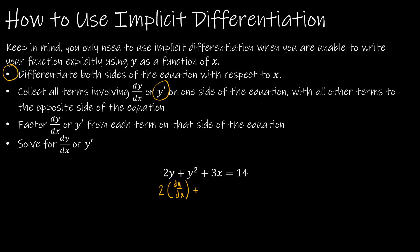Now look at y squared. If this was x squared, the derivative would be 2x — so it's 2y. But then because it's a y, chain rule gives us dy/dx. The derivative of 3x with respect to x is simply 3 — that one's not tricky because it's an x. And the derivative of 14 is 0. So that's step one: differentiate both sides of the equation with respect to x.